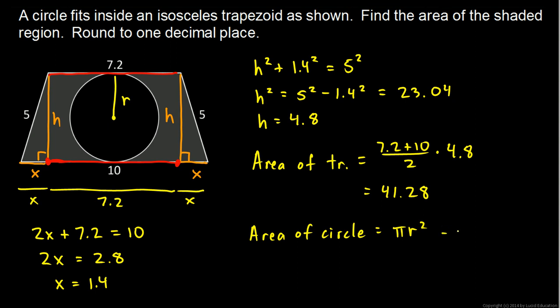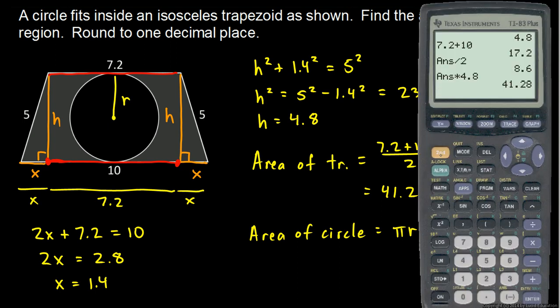So the area of the circle will be Pi times that radius, 2.4 squared. So let's calculate that. Pi times 2.4 squared. Pi times 2.4 squared comes out to 18. I'll round that to 18.1.